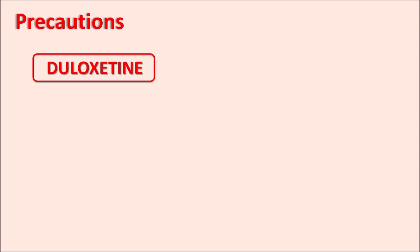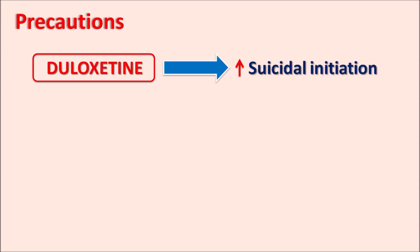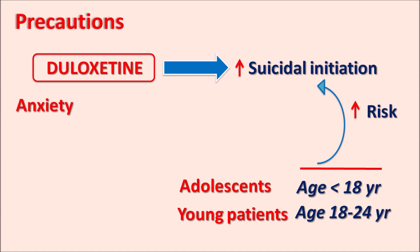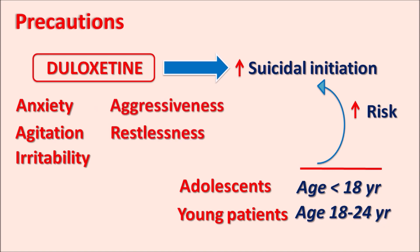Another important precaution of Duloxetine, commonly observed with many antidepressants, is the risk of suicidal ideation. Adolescents under 18 years and young patients aged 18 to 24 years have an increased risk of suicidal ideation. In these patients, symptoms such as anxiety, agitation, irritability, aggressiveness, restlessness, and insomnia can further increase the risk of suicidal ideation. So Duloxetine should be carefully given to these patients.